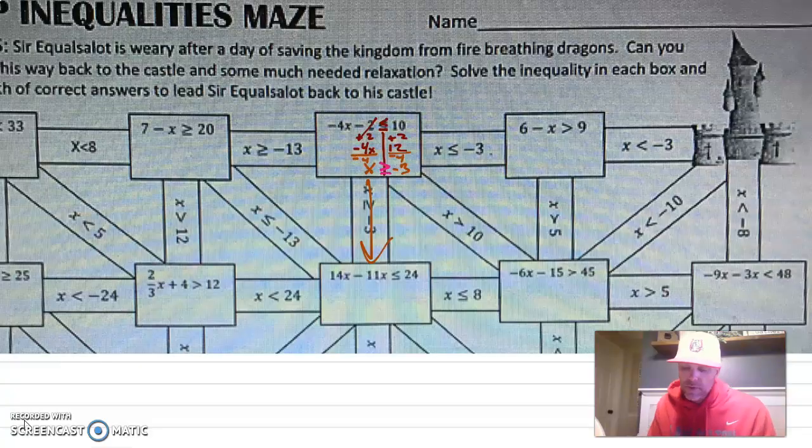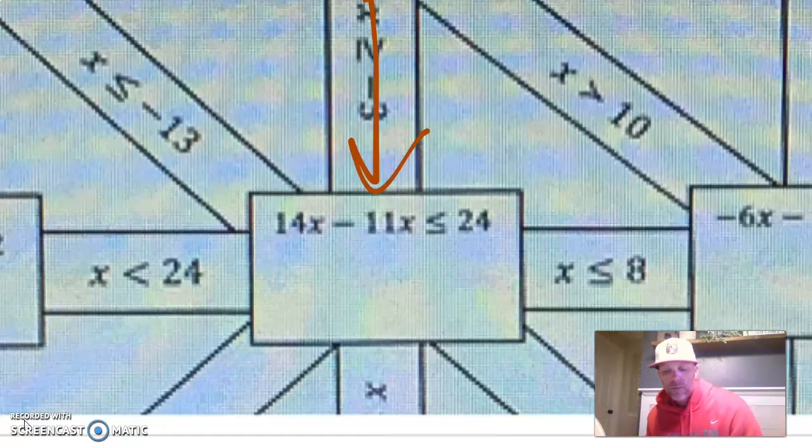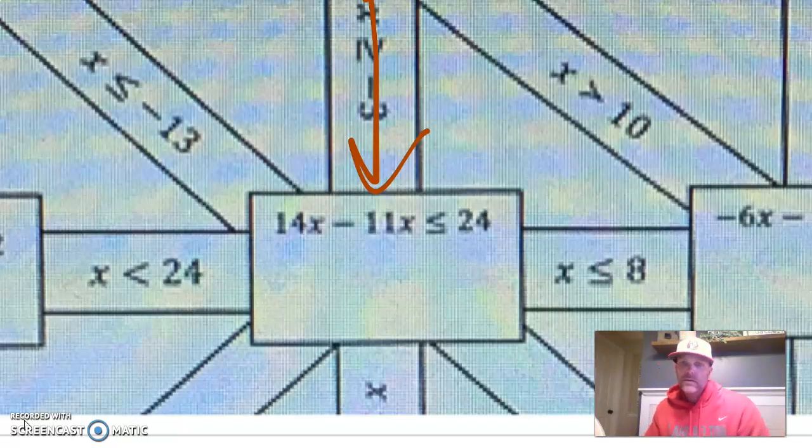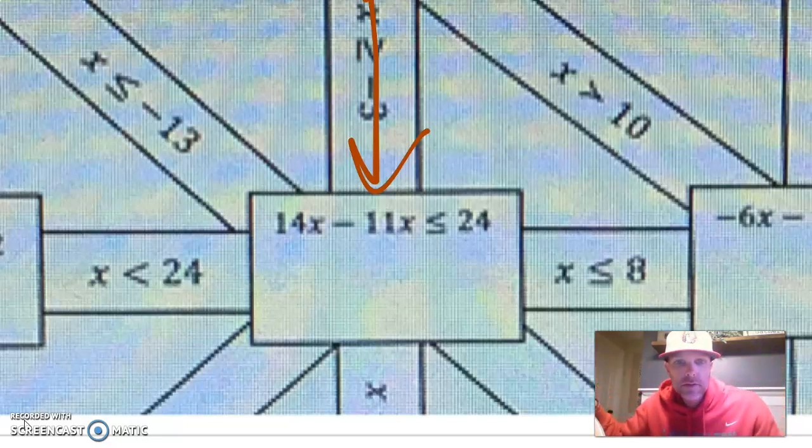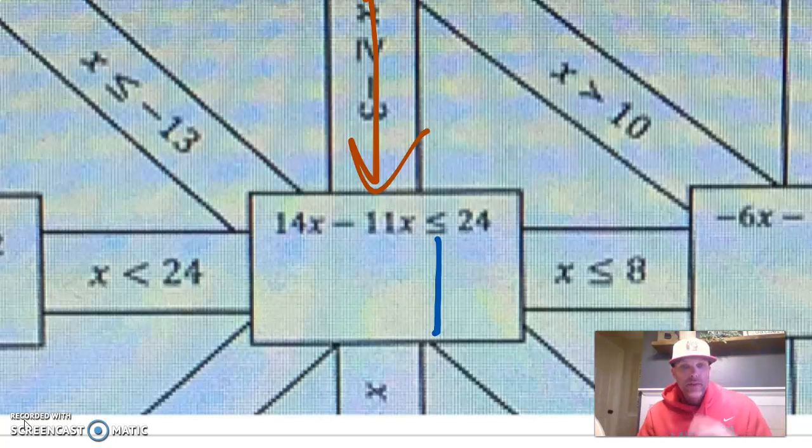All right, so I'm doing this one for a reason. This says 14x minus 11x is less than or equal to 24, okay? So let's look at what wants to be alone. Well, the x wants to be alone, right? Well, there's more than one x. So we need to put these together and then somehow have one x, okay? One variable. So the first thing we want to do, right, get our brain clicking is I'm going to change colors because, you know, why not? There we go. So that gets our brain clicking and now we know that that x wants to be alone.